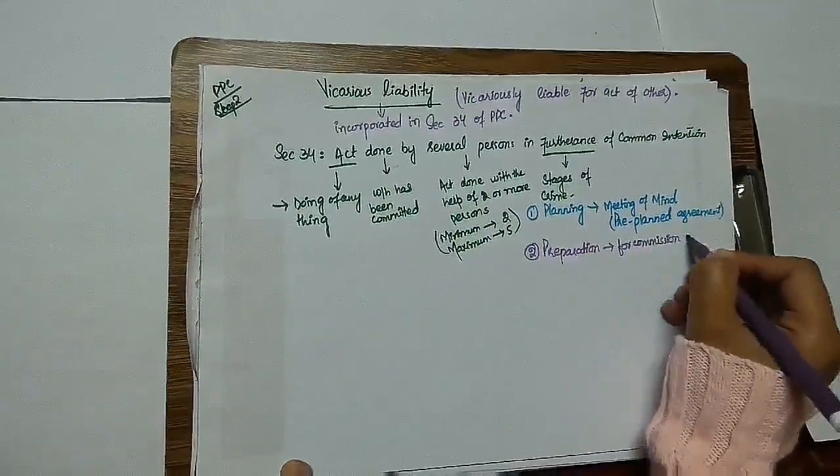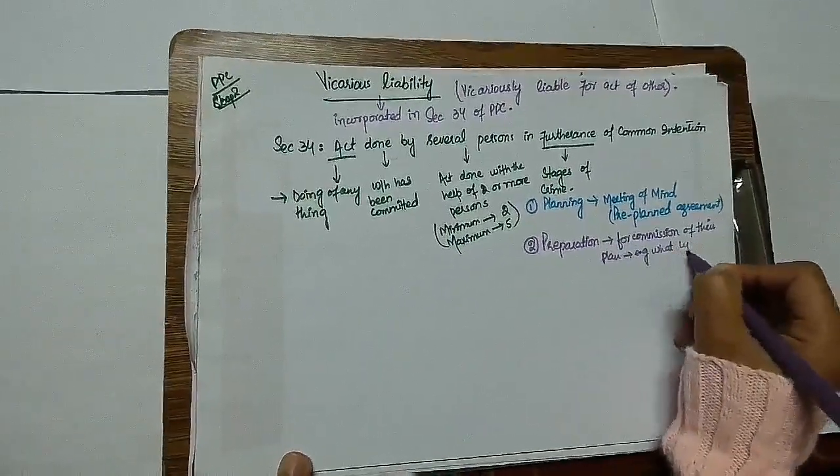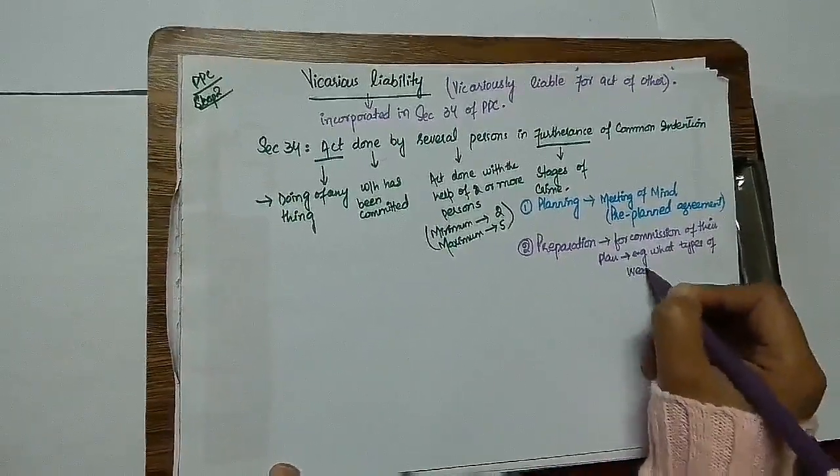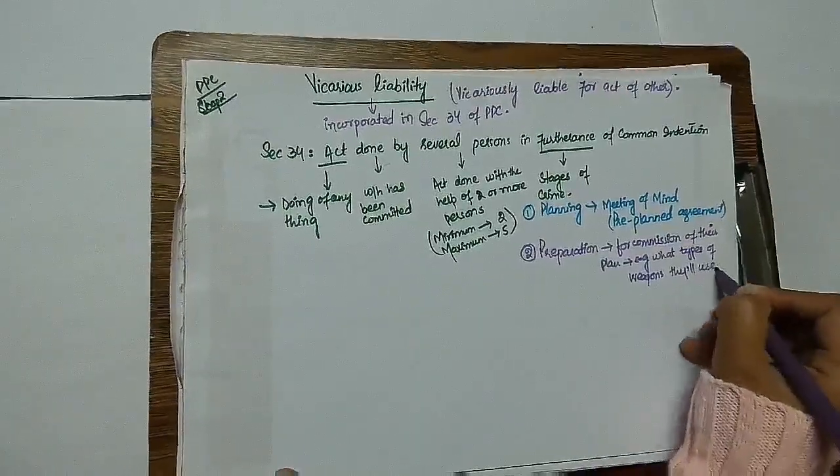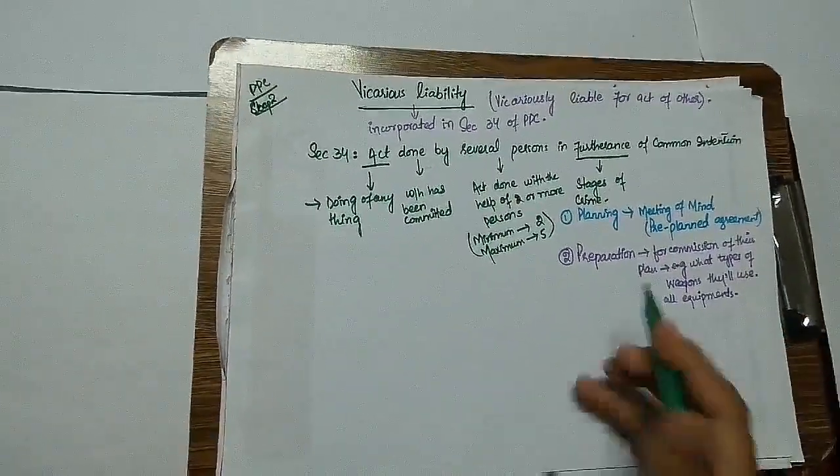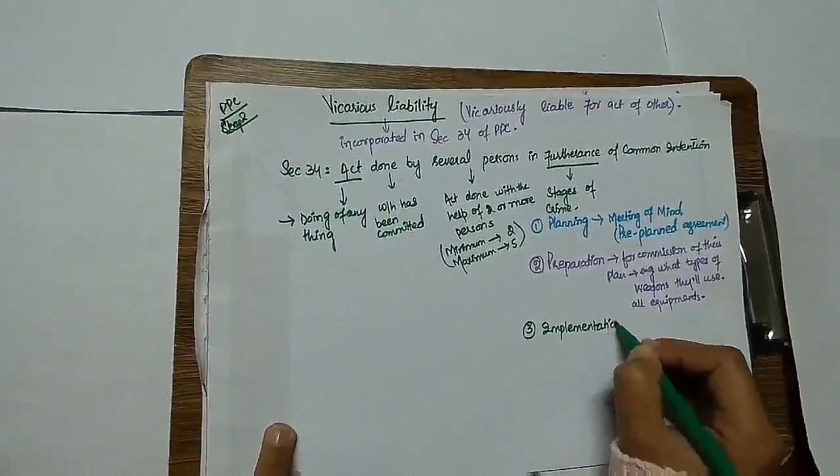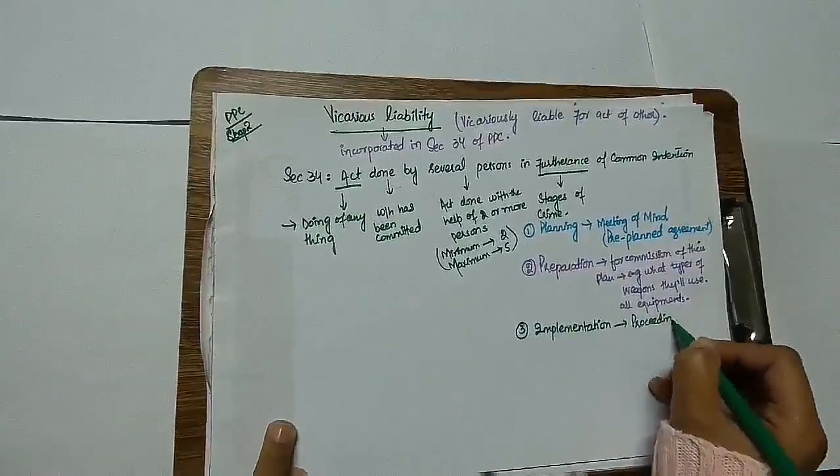They have prepared themselves for the commission of their plan, for the commission of the crime which they are going to commit. For example, in preparation they decide what kind of weapons they will use to perform that act, to commit that crime and all the equipment they will use. Third stage is implementation.